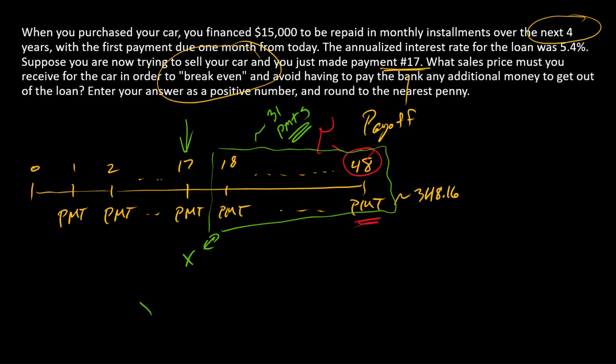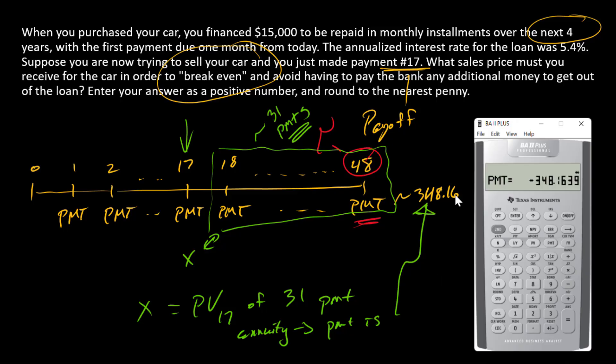So X here is just the present value at time 17 of a 31 payment annuity. And the payment is that amount, right? And so we can go back into our financial calculator. And fortunately, that payment's already there. The interest rate's already there.